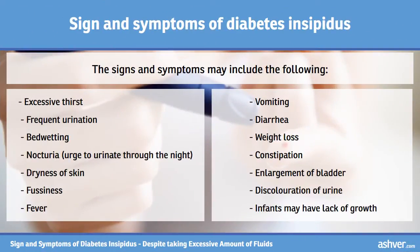The signs and symptoms may include the following: excessive thirst, frequent urination, bed wetting, nocturia, urge to urinate through the night, dryness of skin, fussiness, fever, vomiting, diarrhea, weight loss, constipation, enlargement of bladder, discoloration of urine, and infants may have lack of growth.